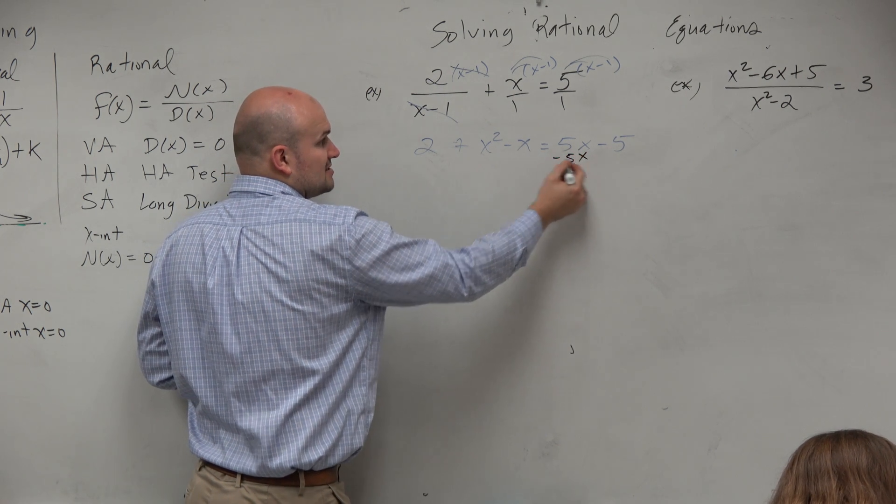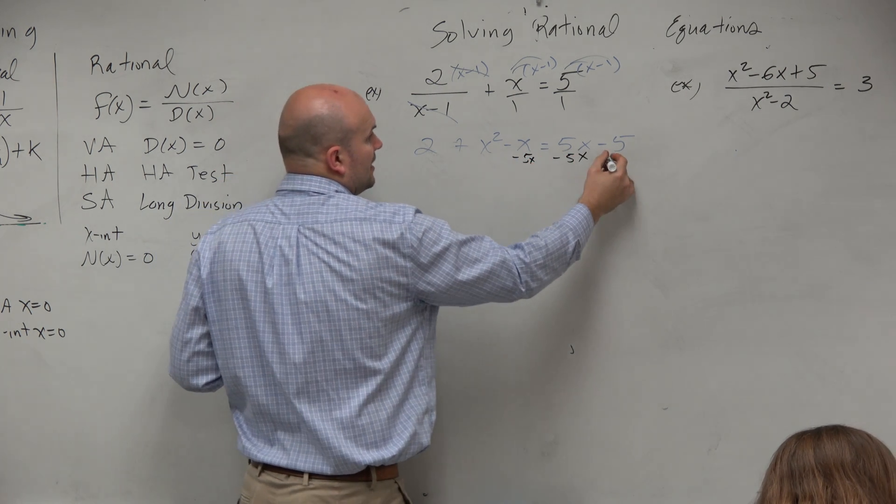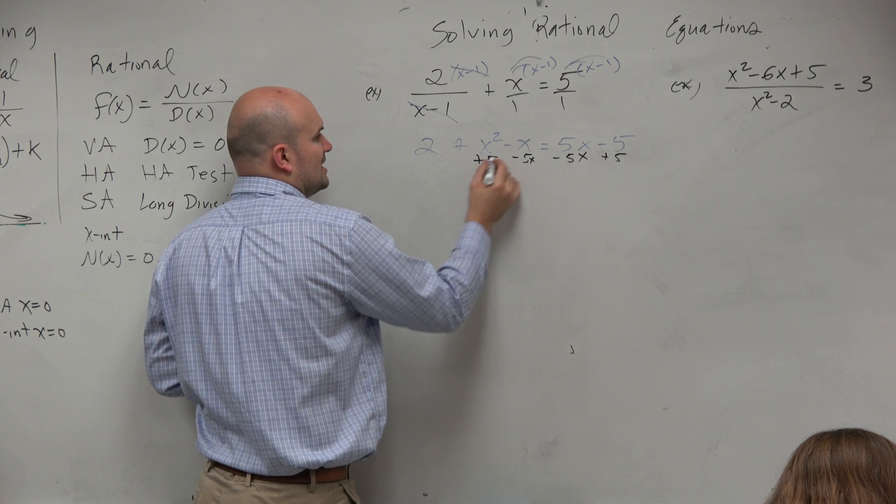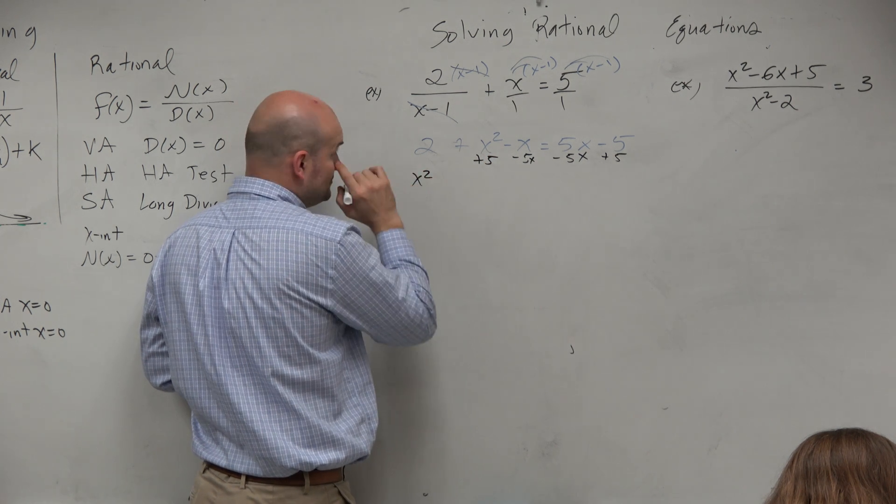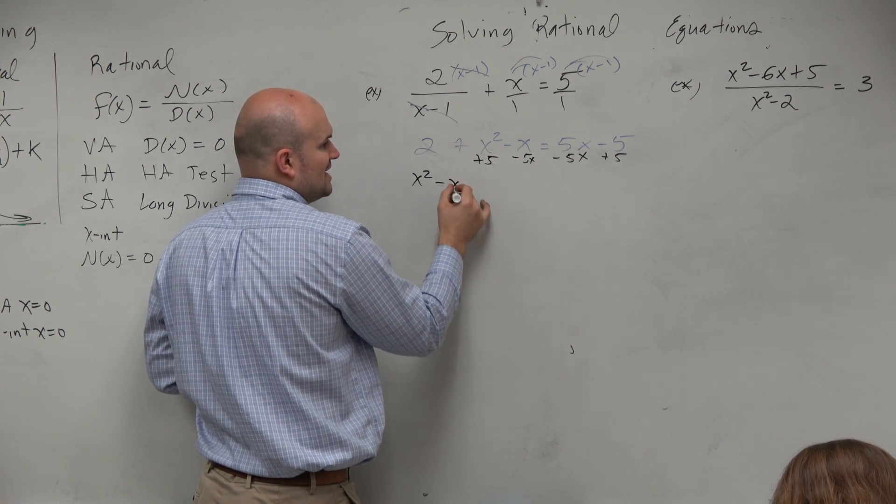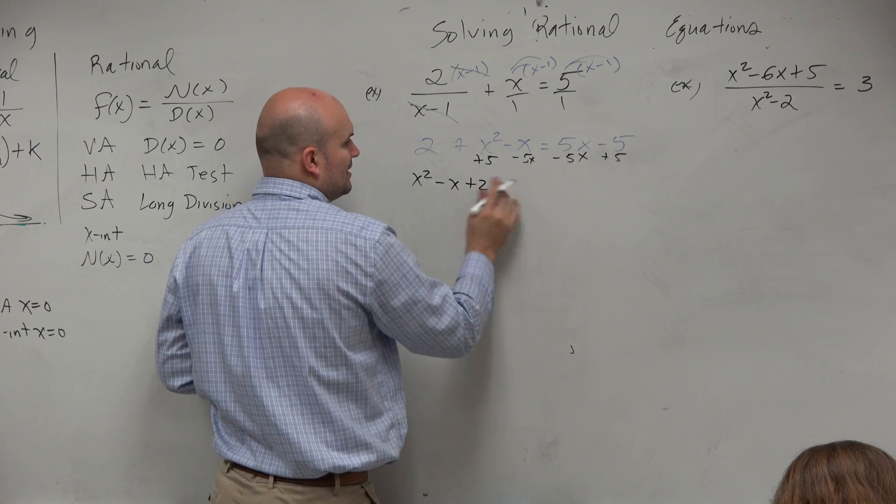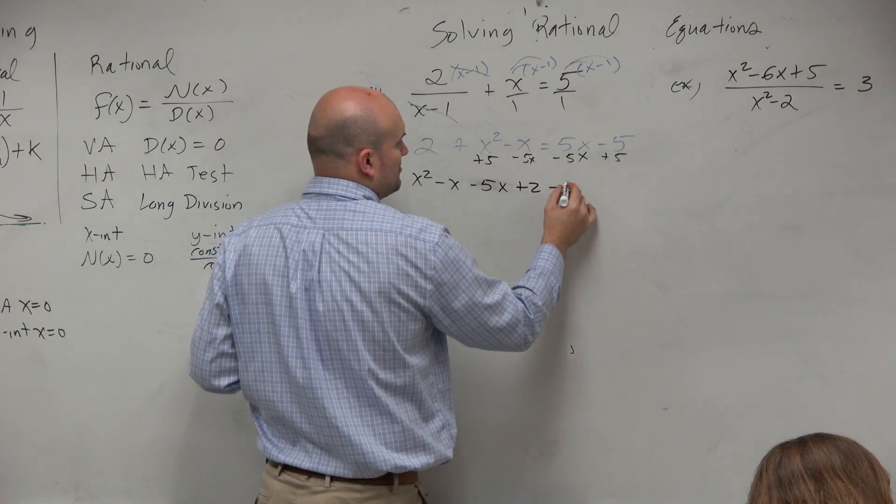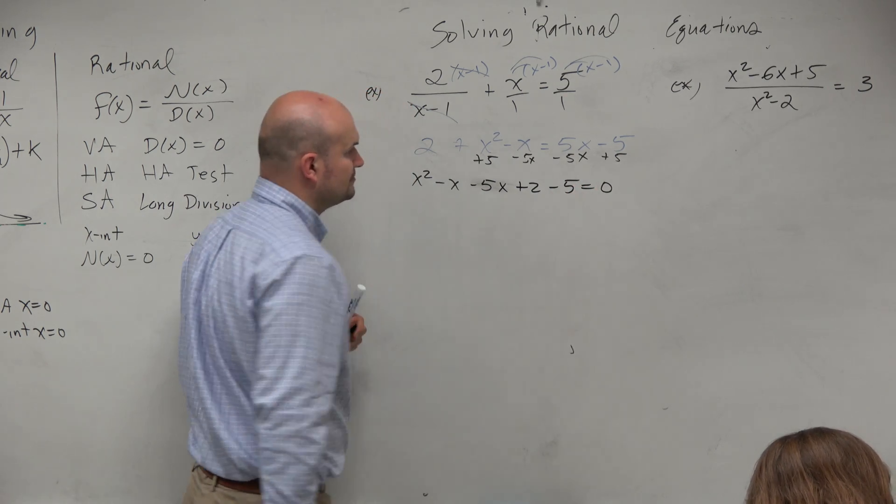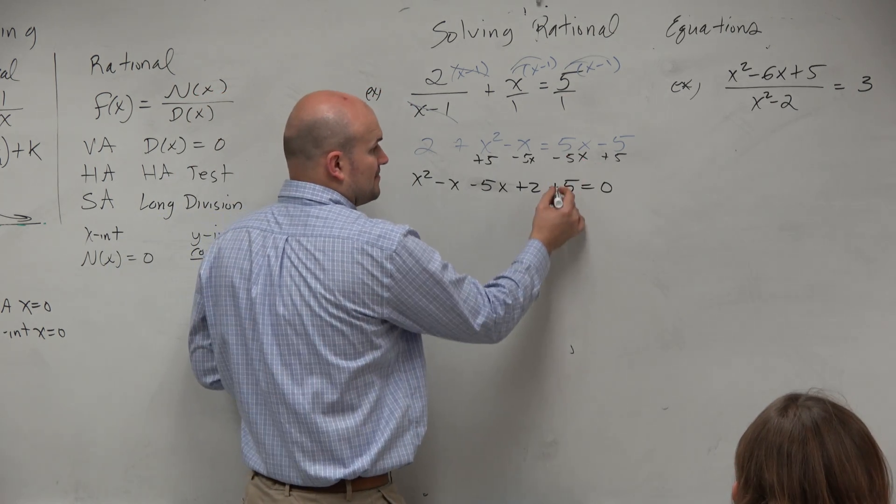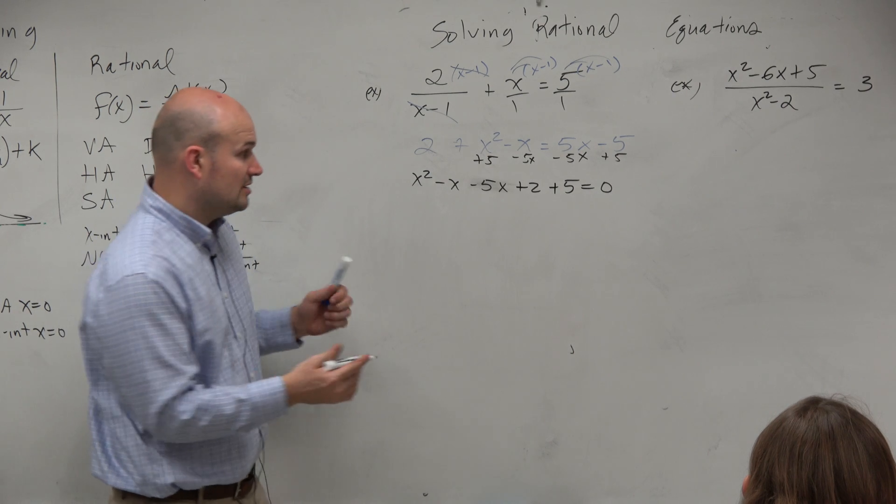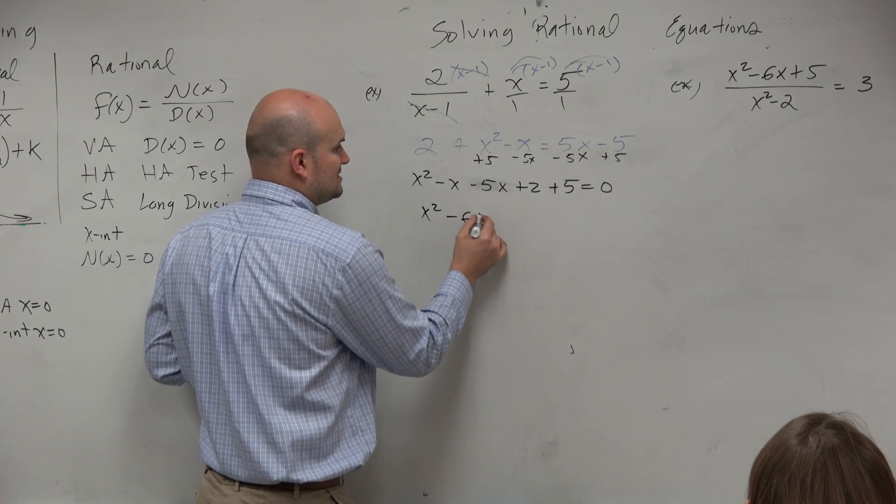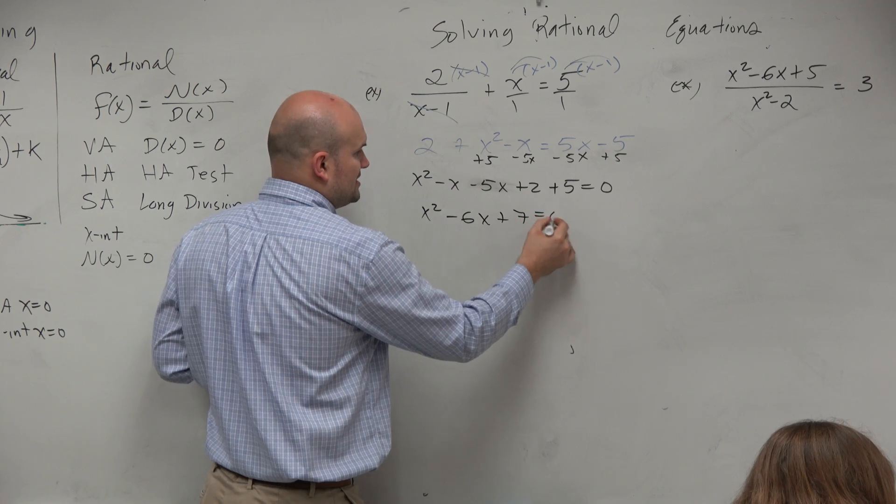So that means I'm going to want to subtract the 5x on both sides and add a 5 to both sides. So x squared, let's see, minus 5x plus 2 minus 5 equals 0. Oh sorry, that's plus 5, isn't it? There we go. Now I can combine like terms. x squared minus 6x plus 7 equals 0.